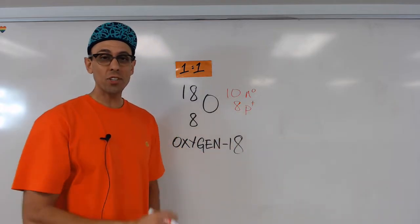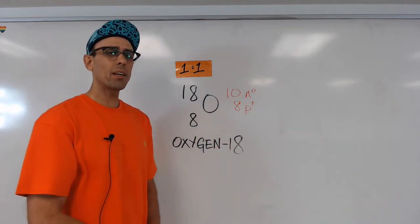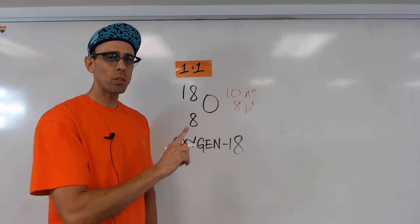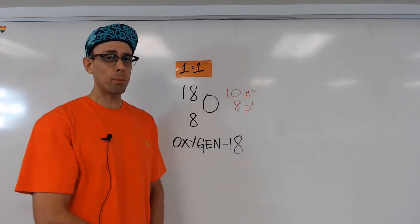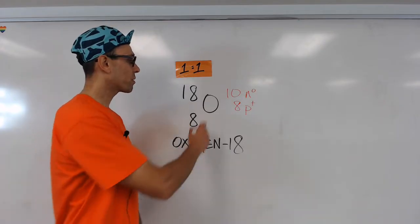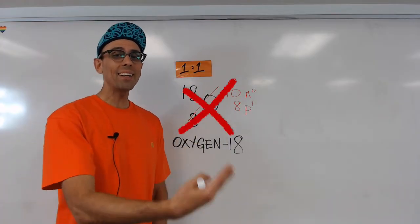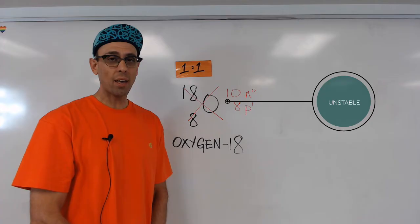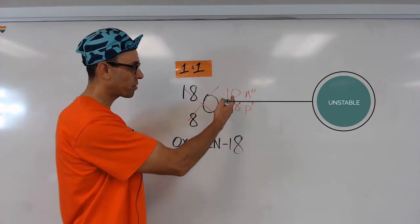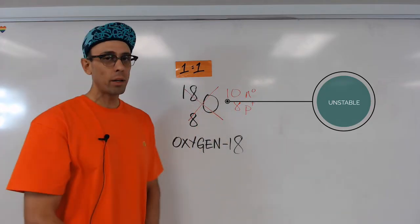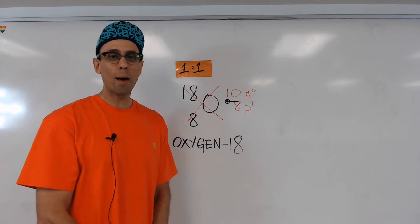So ask yourself, does this particular isotope meet the 1 to 1 ratio required for stability? And the answer is no, it doesn't. Now that just means that this isotope is likely to undergo radioactive decay, because the ratio of protons to neutrons is not 1 to 1, and therefore the nucleus will not be stable.